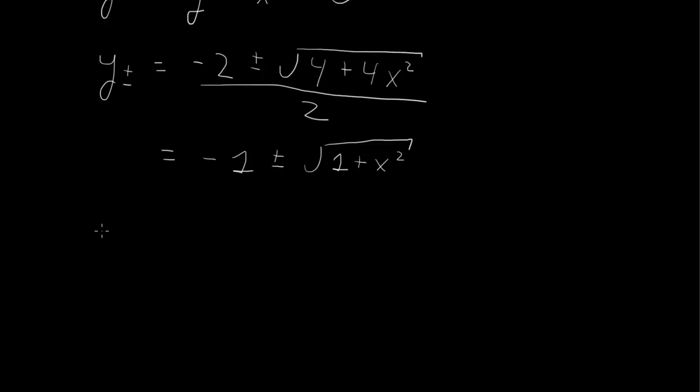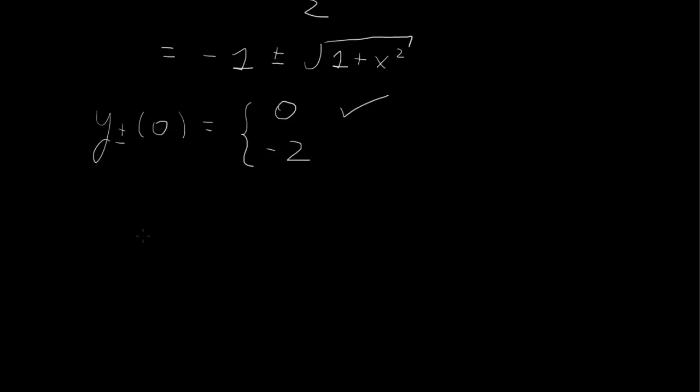Let's look at the value of y(0). For the plus root: -1 + √(1 + 0) = -1 + 1 = 0. For the minus root: -1 - √1 = -1 - 1 = -2. Since y(0) is supposed to equal 0, only the plus root satisfies the initial condition.